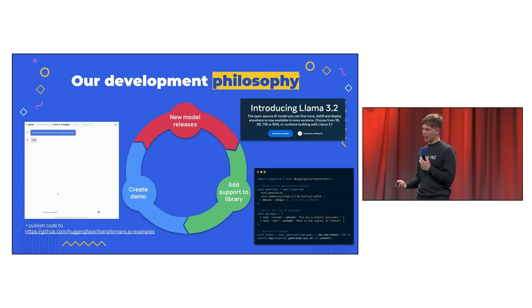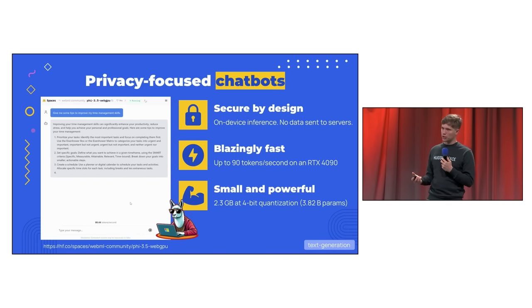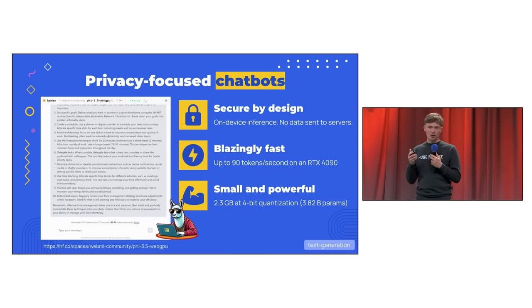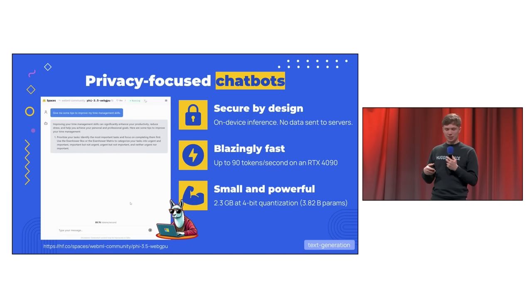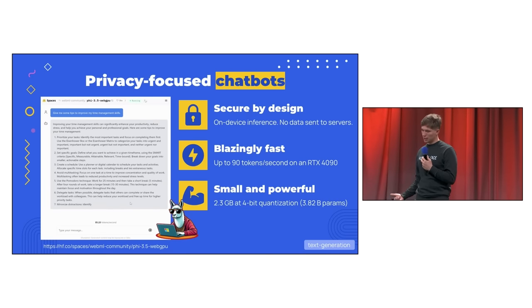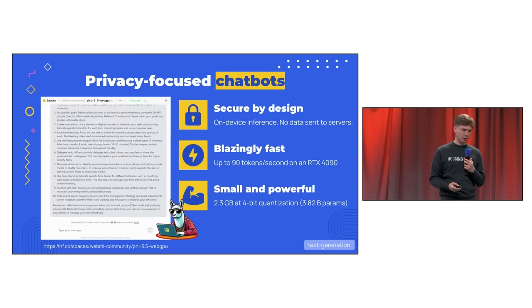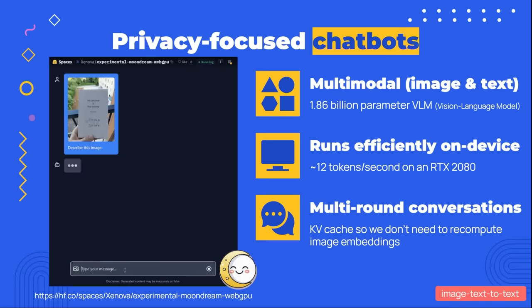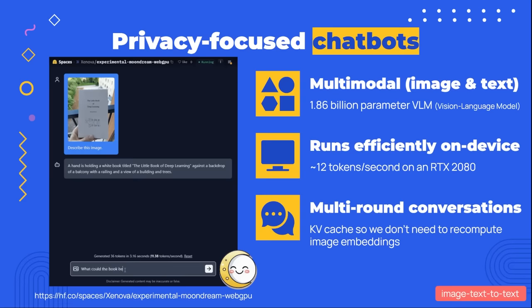Let's look at some applications built with the library, starting with privacy-focused chatbots that run 100% locally in your browser. The model shown here is Phi 3.5 mini, a 4-bit quantized 3.8 billion parameter LLM from Microsoft optimized for inference on the web. Thanks to a specialized multi-head attention WebGPU kernel, it can run up to 90 tokens a second on an RTX 4090. We also added support for multi-modal chatbots, meaning the model can process and respond to image inputs too. The model shown here is Moondream 2, a small vision language model designed to run efficiently on edge devices. We also added the ability to reuse past key values, meaning we don't need to recompute image embeddings for each follow-up message.